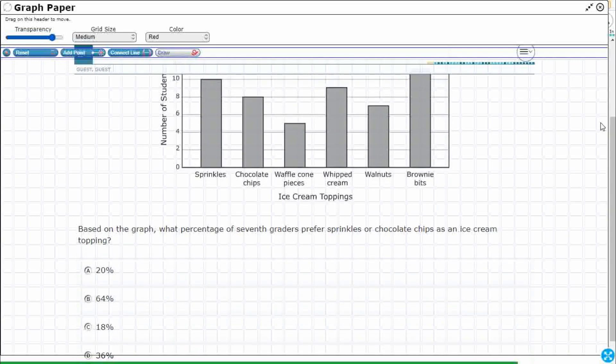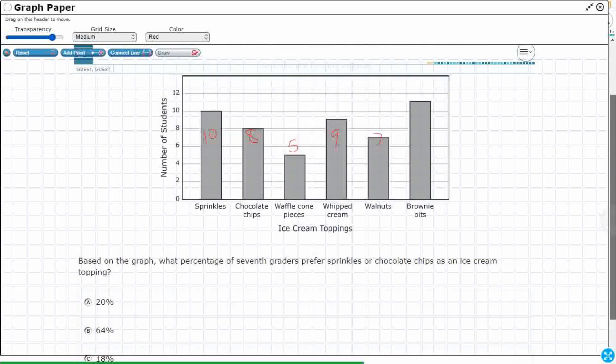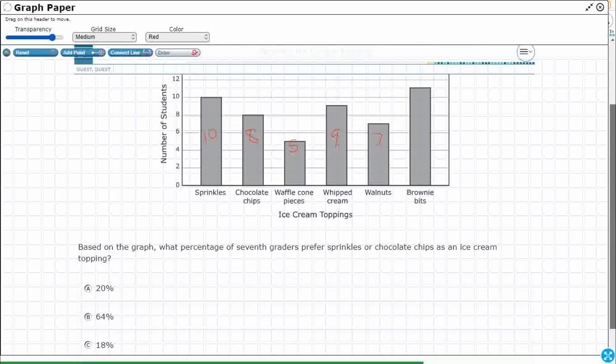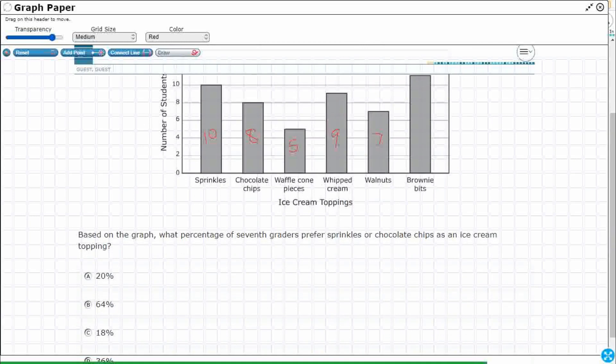I'm going to label all of these. That's 10 for sprinkles and I've got 8 for chocolate chips. My waffle cone piece is between 4 and 6, so that's a 5. Between 8 and 10 for whipped cream, that's a 9. Walnuts is 7, and my brownie bits is between 10 and 12, so we'll call that 11.